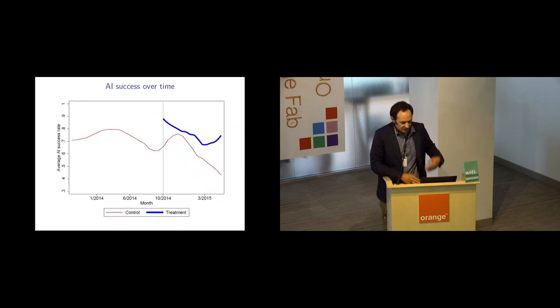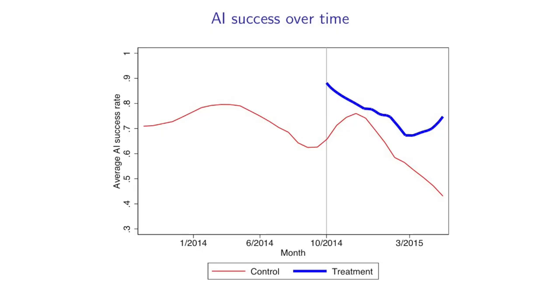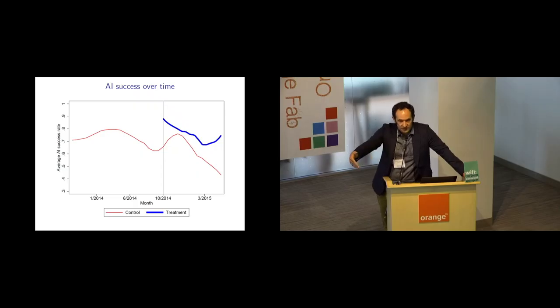So I already previewed the result. Here it is in a picture. So this is just comparing the average AI success rates over time for farmers that were given this information in blue and those that weren't in red. Prior to October 2014, no one was given information. And as soon as we started giving this out across the remainder of our project, those farmers saw higher AI success rates by a large amount.